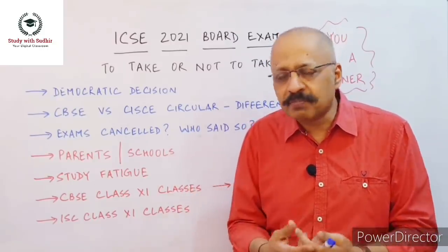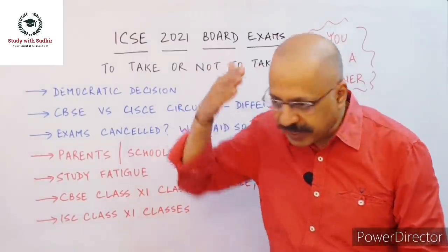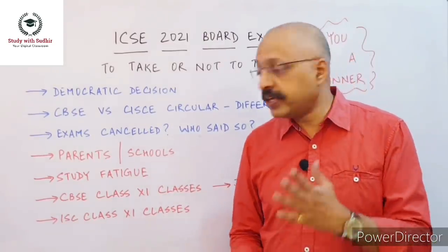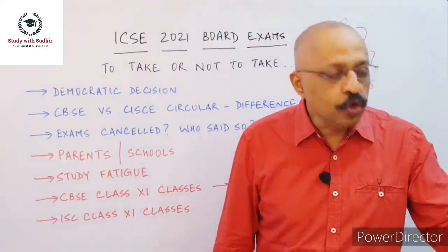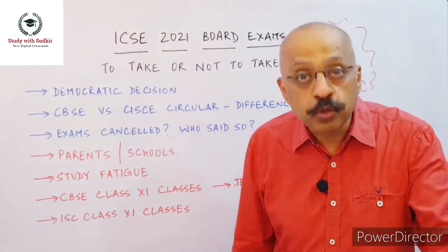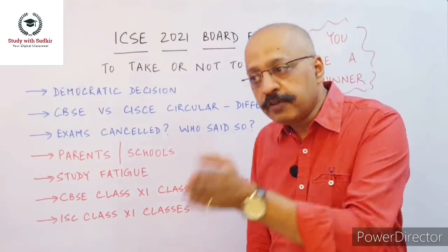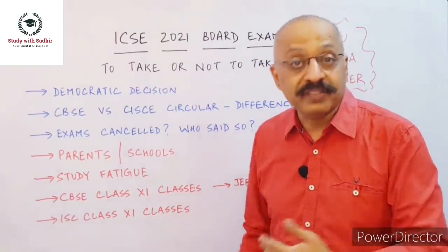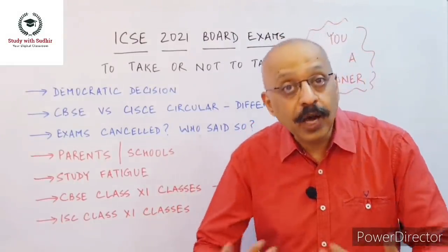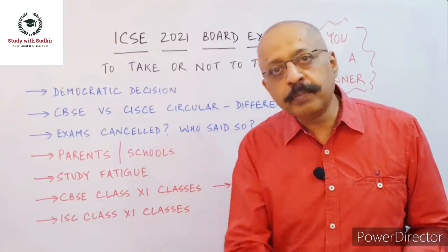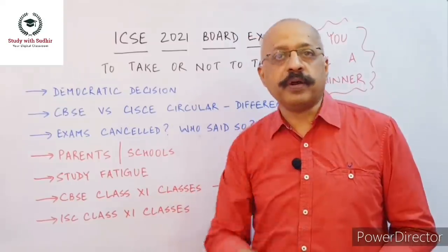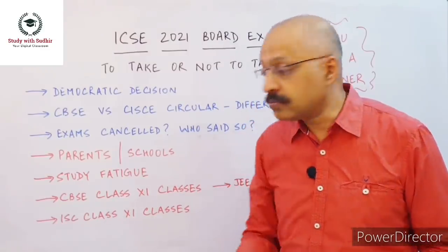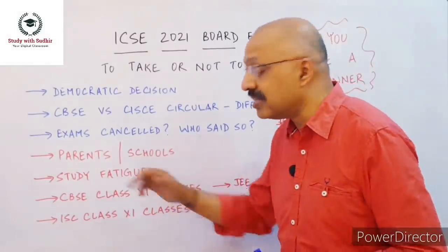Why shouldn't you come out with something totally different instead of following the same set pattern? That's my problem with this circular, with due respect. The study fatigue will be tremendous. At least when you move to Class 11, there will be new books, a new syllabus, new enthusiasm — not the same World War One, the same Merchant of Venice, the same digestive system. At least there will be something upgraded. Allow them to explore, allow them to discover. You are just pushing them into the same well all over again. Study fatigue is very serious; mental health and possible depression is very serious. The council should be more student-friendly in recognizing these problems.